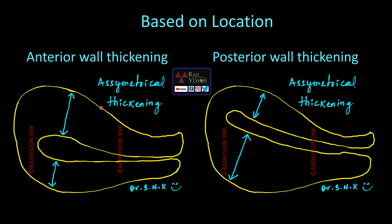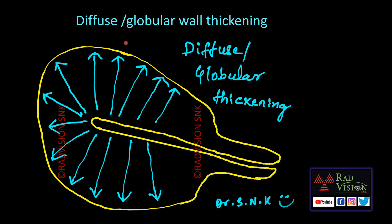Based upon location, you can see asymmetrical anterior wall thickening, asymmetrical posterior wall thickening, or both anterior and posterior walls thickened, leading to diffuse or globular enlargement of the uterus.